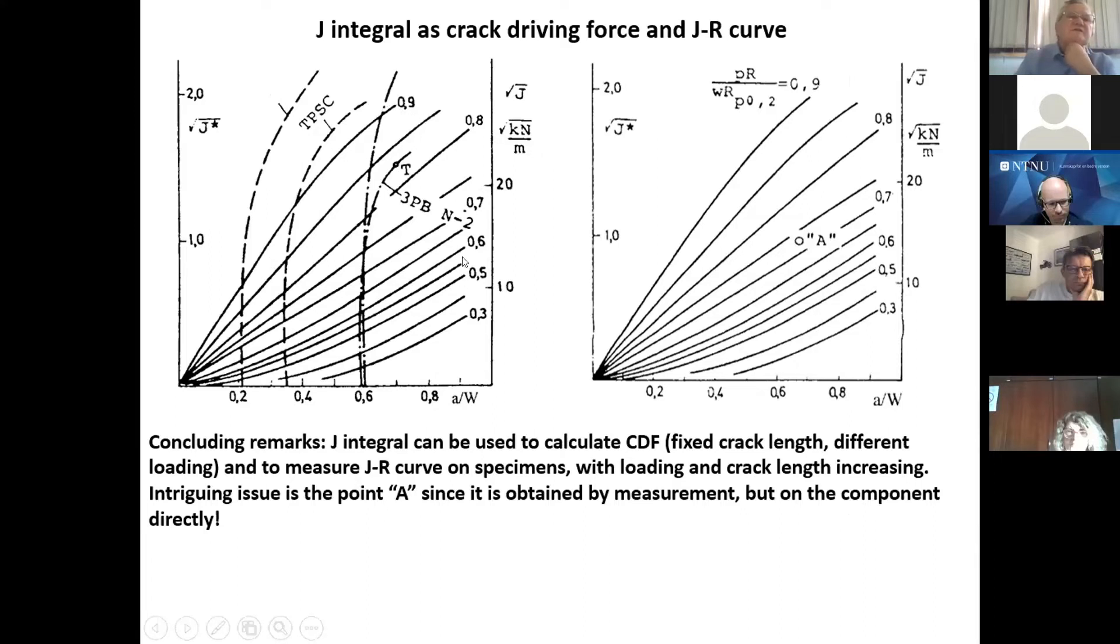Those are here the curves. 0.9 means ratio between applied stress and yield strength. And those crack driving force which are calculated are then compared with the J-R curves which were experimentally obtained. That comparison enabled us, for example, to find one critical point.